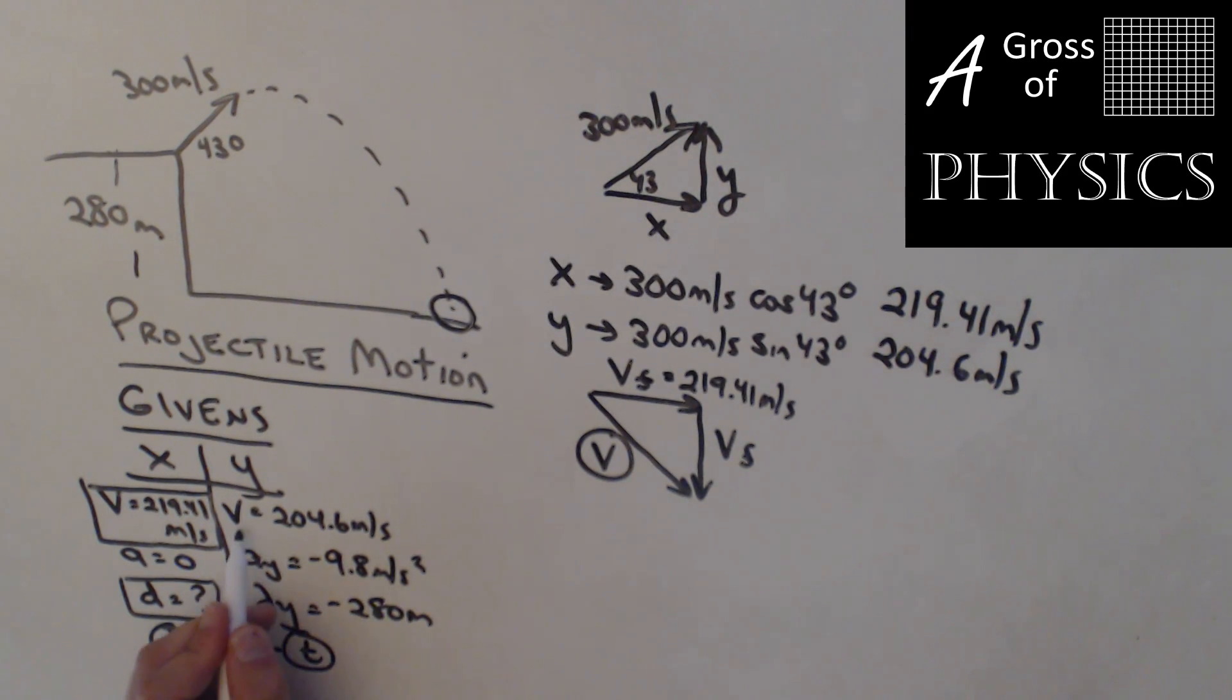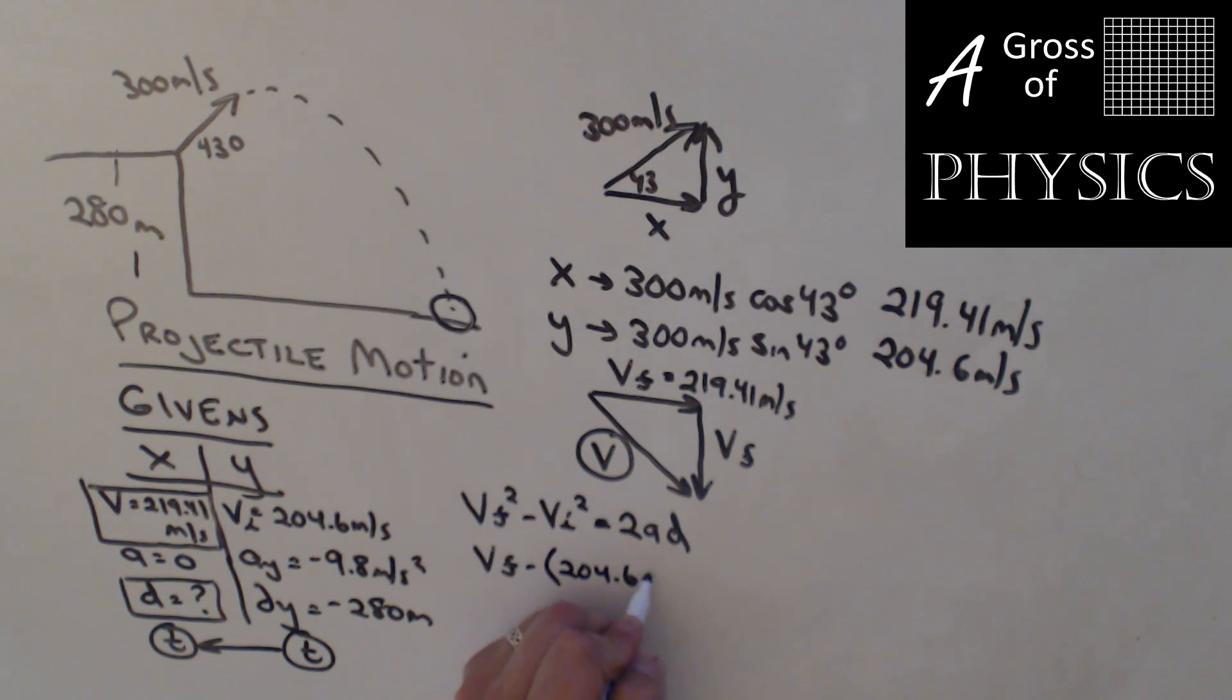Our goal is to find vf in the y. The way to do that is if we know vi, a, and d, we can use equation 5: vf squared minus vi squared equals 2ad. Vf squared minus 204.6 meters per second squared equals 2 times negative 9.8 meters per second squared times negative 280. So we're going to do 204.6 squared, plus 2 times 9.8 times 280. I'm going to get rid of the negatives because these two are going to combine to form a positive.